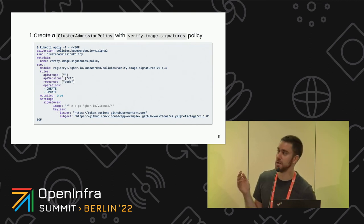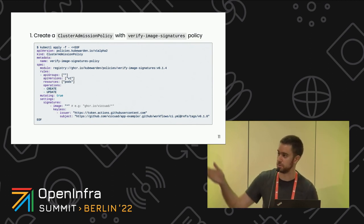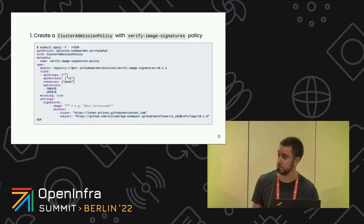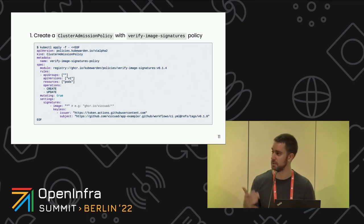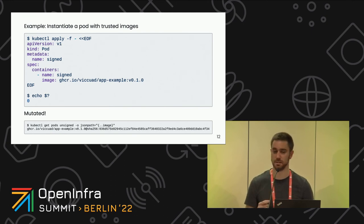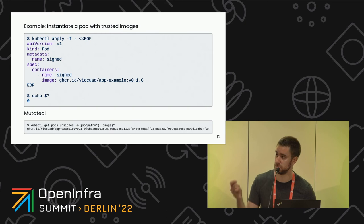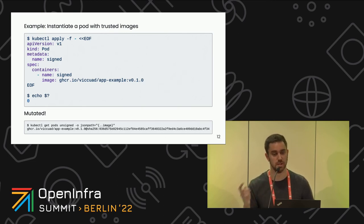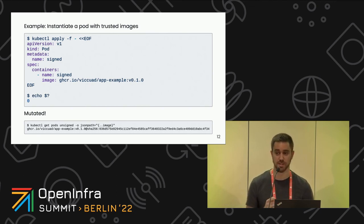How do we do that in the cluster? With Kubewarden, it's just a kubectl apply of a policy. The policy spec references the policy as a container image, you set it for pods on create and update, and pass the configuration. When you instantiate a pod and it verifies, Kubewarden mutates the pod with the digest — so you'll see 'app-example:0.1.0' with the SHA256 digest appended. Only what should go to the cluster actually gets there.